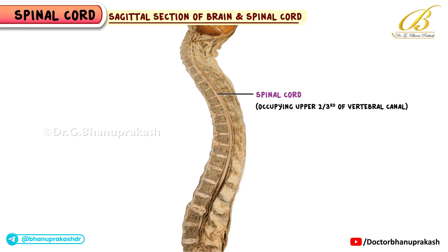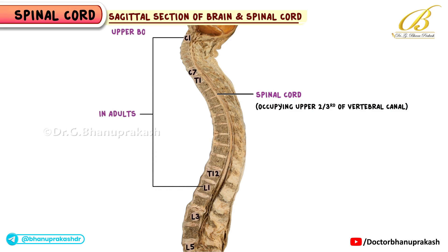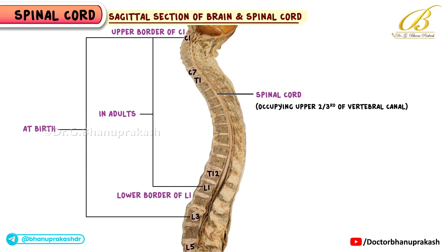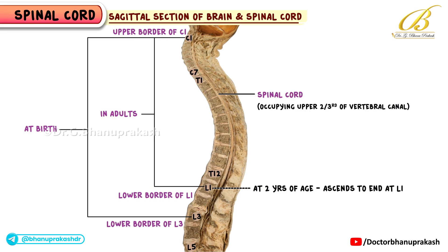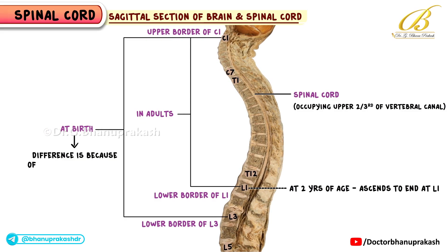Here's what we need to remember. In adults, the spinal cord typically starts at the upper border of C1 and goes down to the lower border of L1. At birth, it extends a bit lower, down to the lower border of L3. By about two years of age, it ascends to end at L1, where it remains for the rest of adult life. This difference at birth is mainly because the spinal column grows faster than the cord itself, causing the cord to shift higher over time.